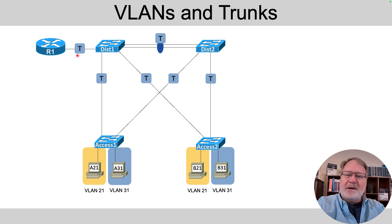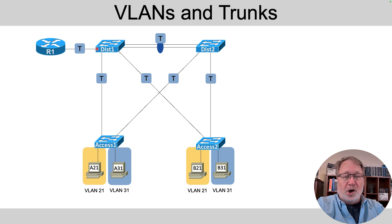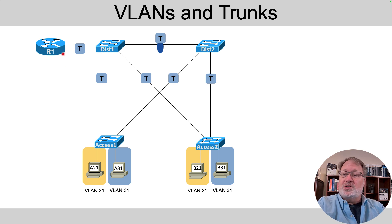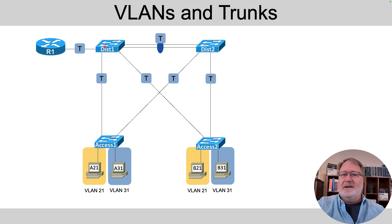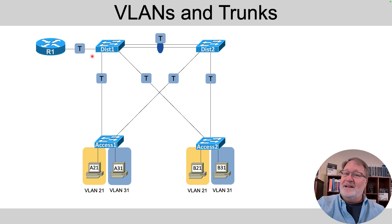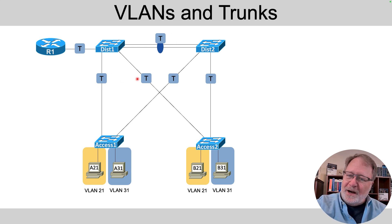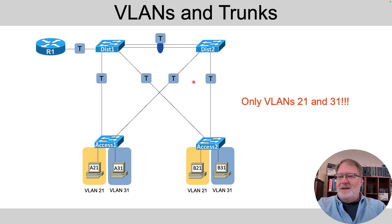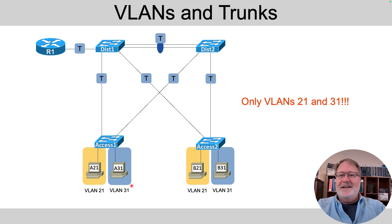We'll also have trunking between router R1 and dist1, and that's pre-configured both on the router and on dist1. The way router R1 is pre-configured to route for those two subnets requires VLAN trunking between the router and dist1 — but that trunking is pre-configured. You'll see a few commands on dist1 in the pre-configuration section. You'll have to configure trunking on all five of the other links. The instructions say to make sure those trunks support only VLANs 21 and 31.